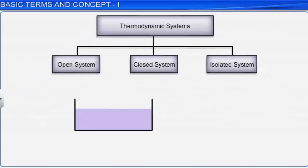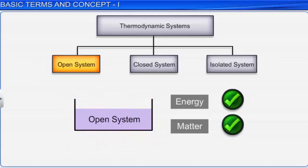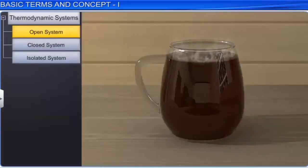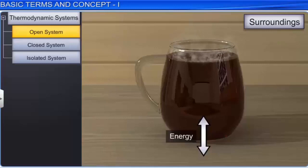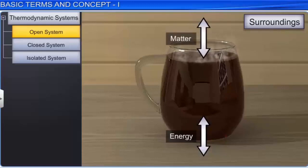A system is said to be open if it can exchange both energy and matter with its surroundings. For example, tea becomes cold when left open for some time in a container, as a result of exchange of energy with the surroundings. At the same time, some amount of tea escapes from the cup as vapor, because of exchange of matter with the surroundings. Hence, this is an example of an open thermodynamic system.